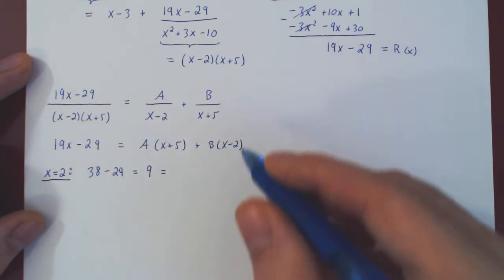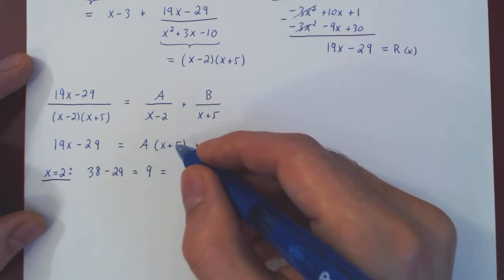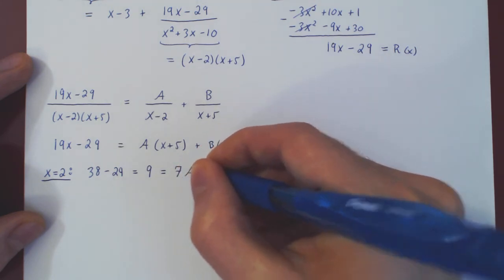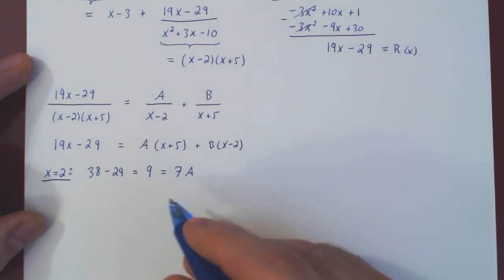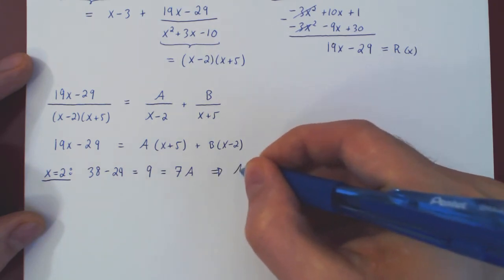This would be equal to 7A. So 9 equals 7A, divide across by 7, and so A is simply 9 over 7.